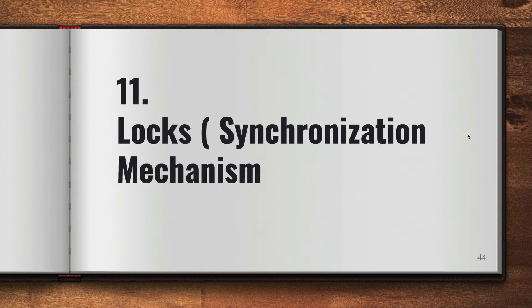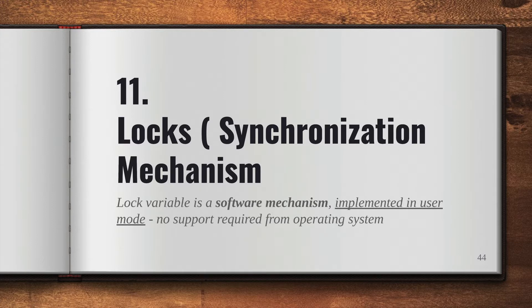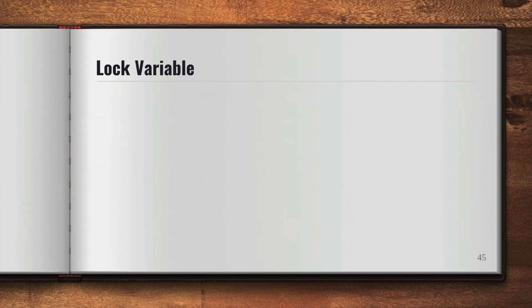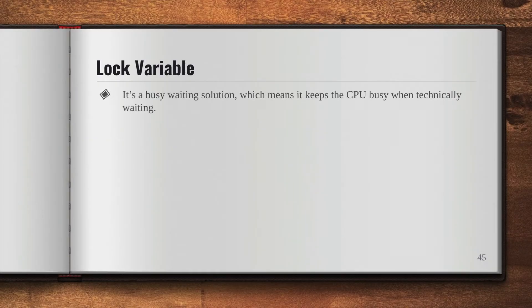In this video we're going to talk about locks — the synchronization mechanism using lock variables. A lock variable is a software mechanism implemented in user mode, which means no support is required from the operating system; the user manages this lock variable. It is also called a busy waiting solution, meaning it keeps the CPU busy while technically waiting.